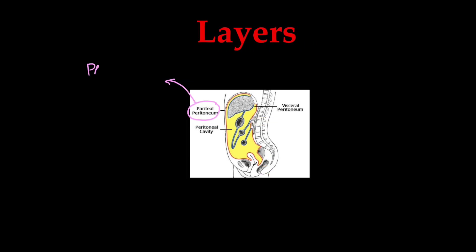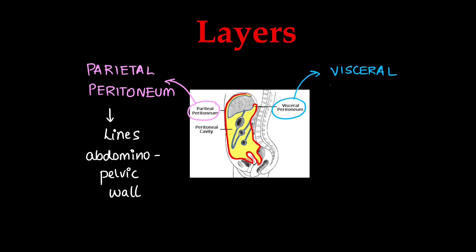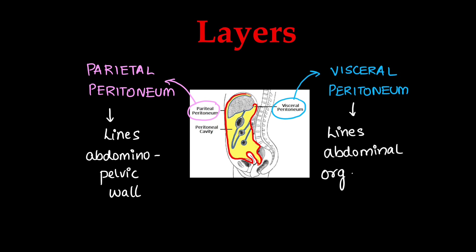To begin with, peritoneum has two layers. The parietal peritoneum lines the abdominal walls — the anterior abdominal wall, the pelvic wall and the posterior abdominal wall. The next layer is the visceral peritoneum, shown in blue, which lines the abdominal organs and the hollow viscus.